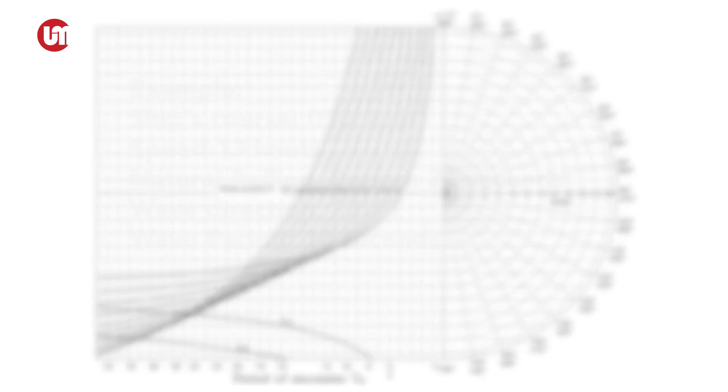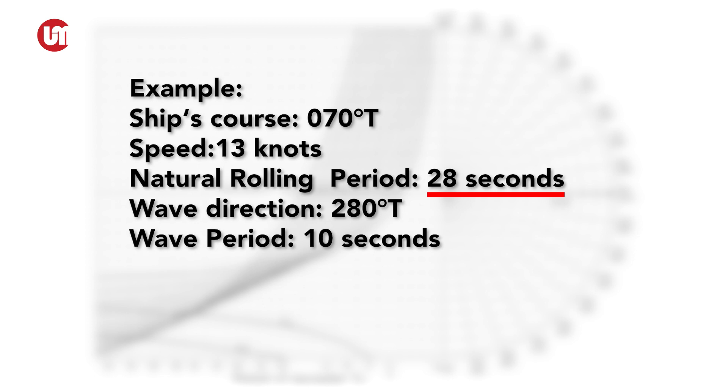The ship's rolling period was calculated at 28 seconds for this current GM. Your ship's course is 070 degrees true and wave is coming from 280 degrees true. Therefore, the angle of encounter is 210 degrees.